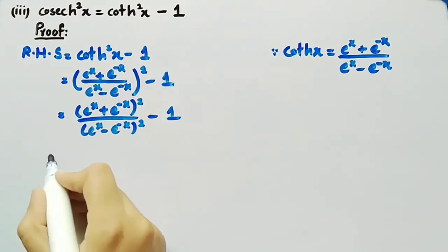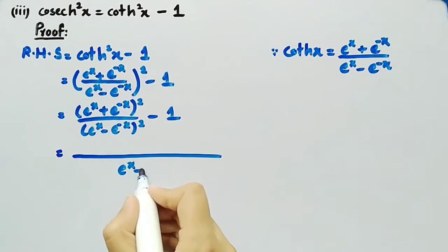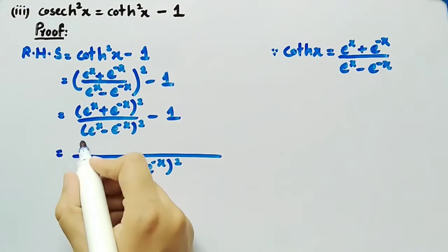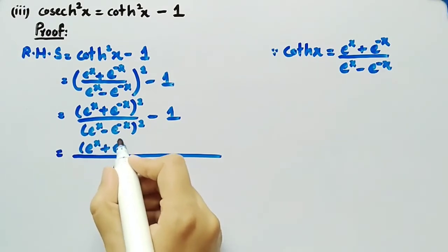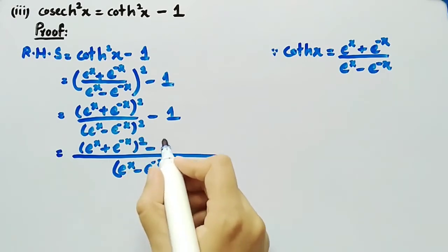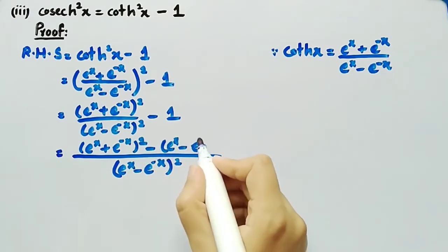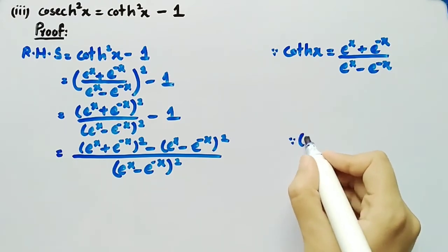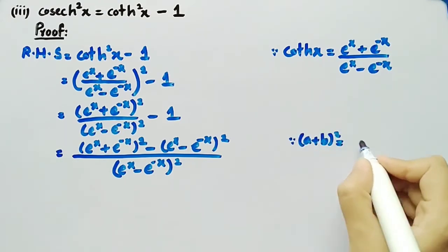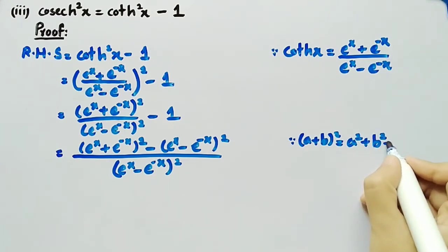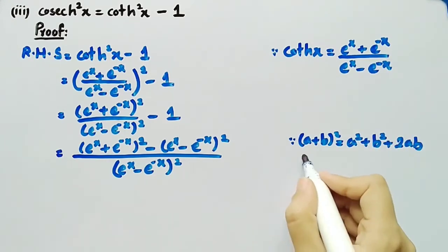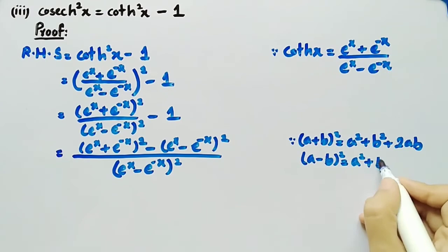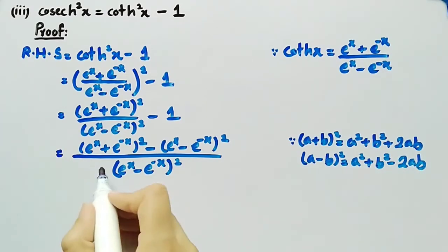We will take the LCM, which is e raised to power x minus e raised to power minus x whole square. In the numerator, there will be e raised to power x plus e raised to power minus x whole square minus e raised to power x minus e raised to power minus x whole square. For these two terms, we will use the formulas: a plus b whole square equals a square plus b square plus 2ab, and a minus b whole square equals a square plus b square minus 2ab.